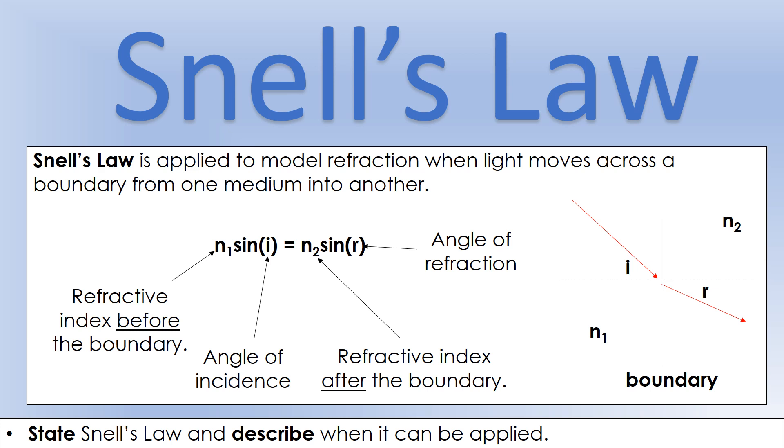If we look at the diagram on the right hand side, we can see from the direction of the arrows which side is the n1 side, before it hits the boundary, and which side is n2 afterwards. That's our general setup for Snell's law problems.